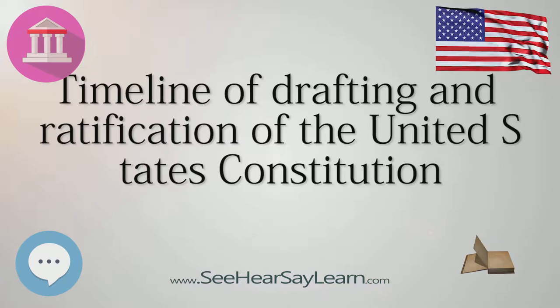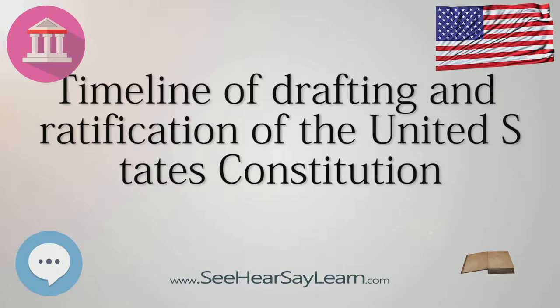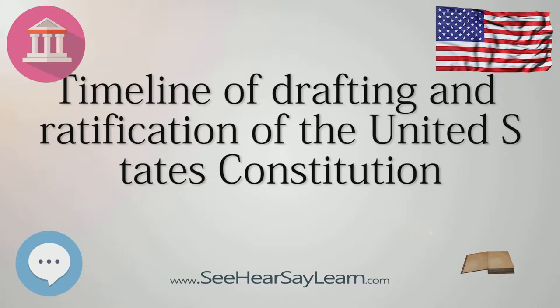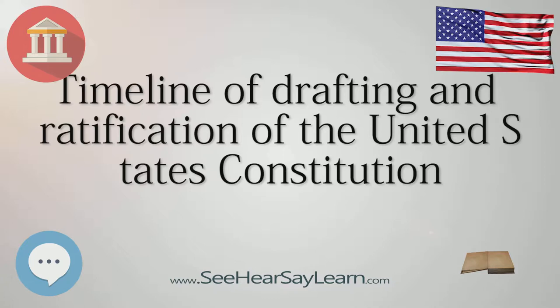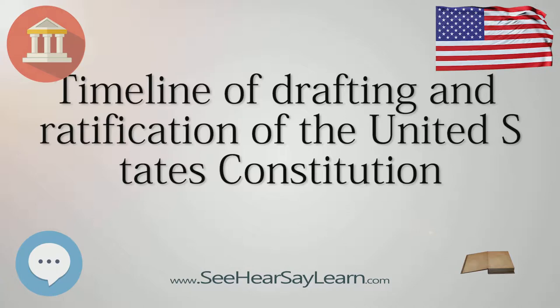July 2: A Committee of Eleven — composed of Abraham Baldwin, Gunning Bedford, William Davey, Oliver Ellsworth, Benjamin Franklin, Elbridge Gerry, Luther Martin, George Mason, John Rutledge, William Patterson, and Robert Yates — is selected to work out a compromise on the issue of representation in the two houses of the federal legislature. Committees like this one, composed of one delegate from each state, were established to secure breakthroughs so that the deliberative process could move forward.